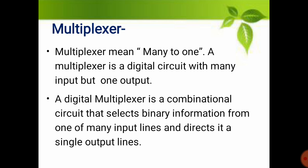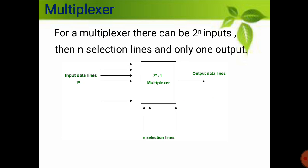Keep in mind: the selection of a particular input is controlled by a set of selection lines. For a multiplexer, there can be 2 to the power n inputs, then n selection lines, and only one output. See this diagram.